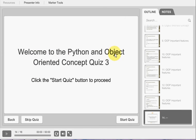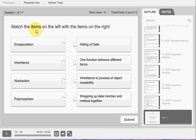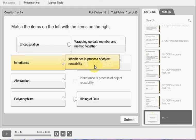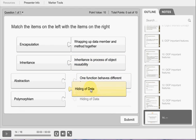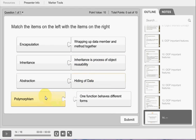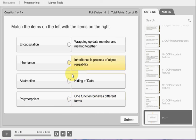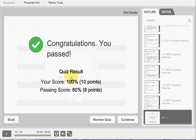That is the time for activity. That is match the item on left with item on right. Encapsulation, we can say it is wrapping of data and member together. Inheritance means inheritance is a process of object reusability. Abstraction means hiding of data. Polymorphism means one function behaves in different forms. Answer is correct.